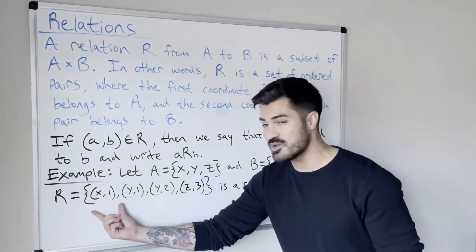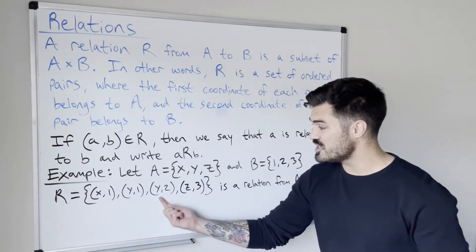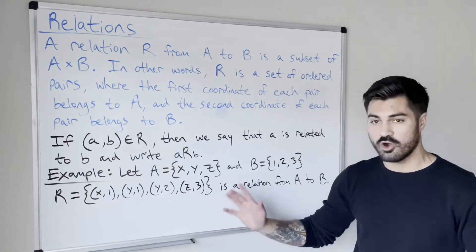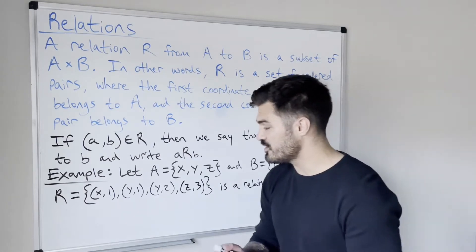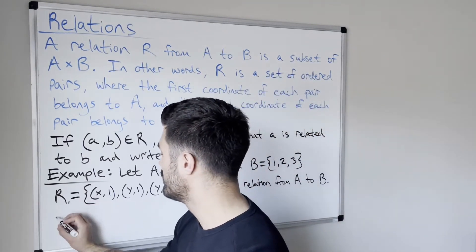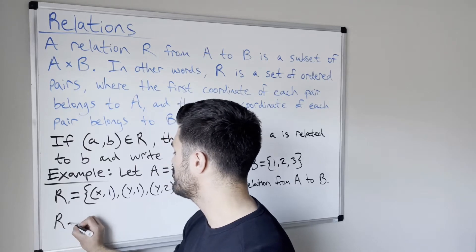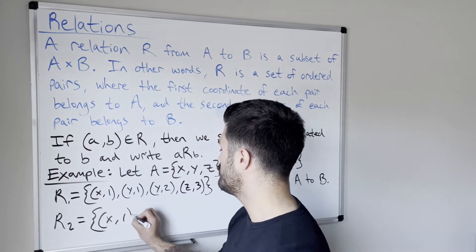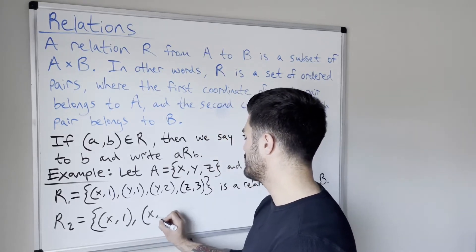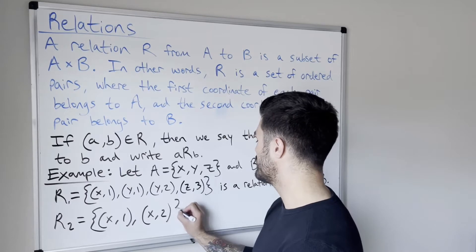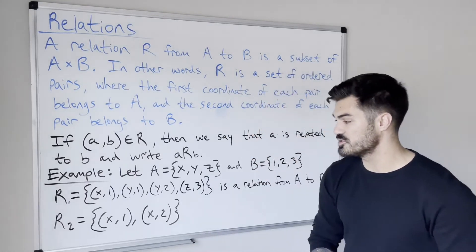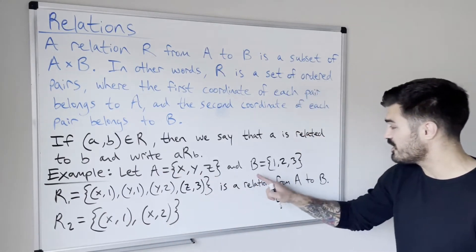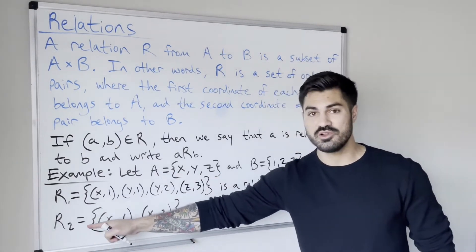Or we could take a proper subset like this. We don't even have to use each element — we see that X, Y, Z, and 1, 2, 3 are all used here. But we can actually define another relation, say R1, that doesn't have to be the case. We can define a relation where we say X is related to 1 and X is related to 2 — it's any subset of that Cartesian product. So even though we're not using every element from A, nor every element from B, this is still a relation.